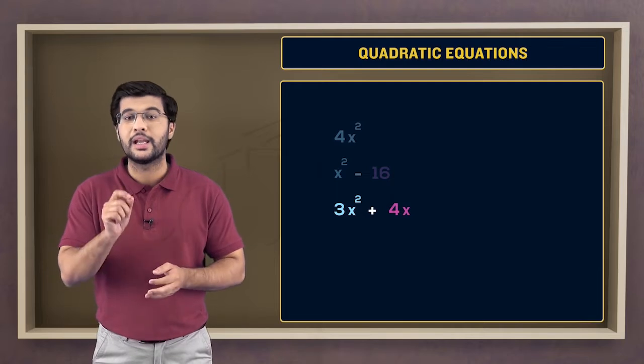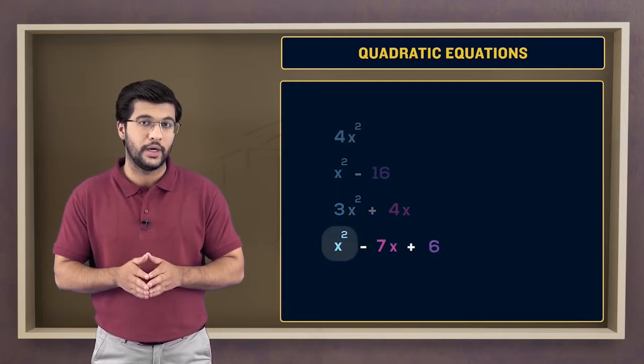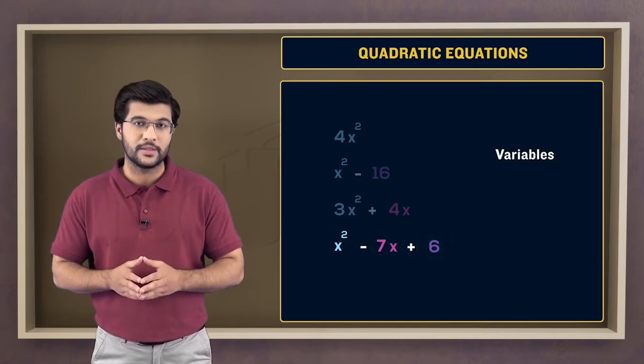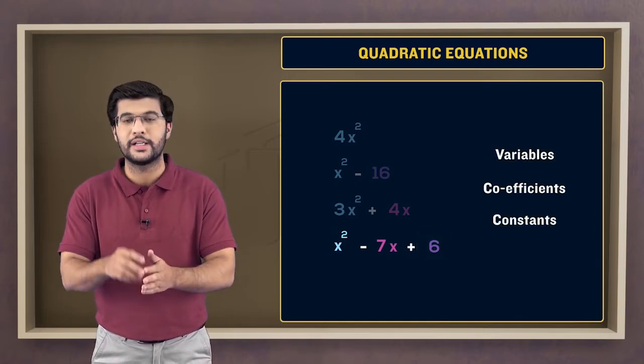And finally, the last expression has three terms: x squared, 7x, and then 6. You can now identify the variables, coefficients, and constants yourself.